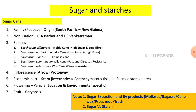Sugarcane inflorescence is a panicle, also called an arrow. Sugarcane is an example of protogyny — the female reproductive organ matures before the male, making it a cross-pollinated crop. The economic part of sugarcane is the stem, specifically the internode. The node contains fiber, while the parenchyma of the internode is used for sucrose storage.